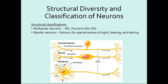Bipolar neurons have two extensions coming off the cell body — though at the very ends they branch out further. Bipolar neurons are found in your special senses: these are the neurons in your eyes that allow you to see, in your mouth for taste, and in your nose for smell. Just to clarify — this has nothing to do with bipolar disorder; that's a completely unrelated medical term.